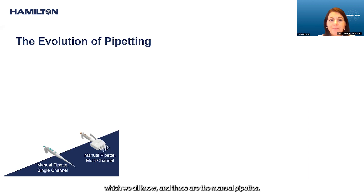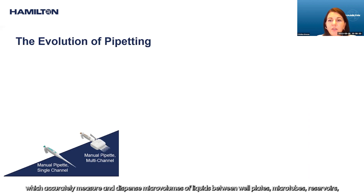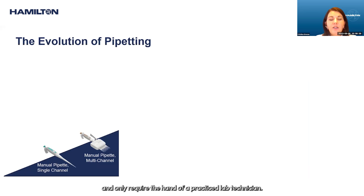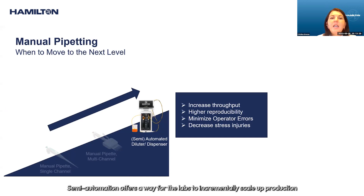Manual pipettes — using fixed volume or adjustable pipettes — are fast in small applications, accurately measuring and dispensing micro volumes of liquids between well plates, micro tubes, and reservoirs, requiring only the hand of a practiced lab technician. The next step after manual pipetting is semi-automation.